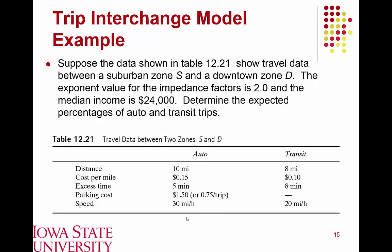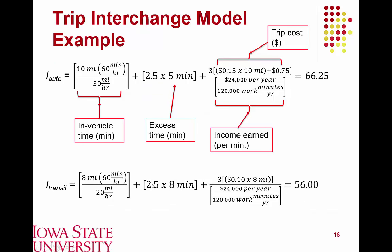We convert all quantities into equivalent minutes. For example, we use the 30 mph travel speed and 10-mile trip distance to estimate total time spent in the automobile, and the 20 mph average speed and 8-mile trip length for transit. Excess time is computed and scaled by 2.5 because travelers are more sensitive to it. Trip cost is scaled by income and converted to equivalent minutes based on median income. The resulting impedance value for auto is 66.25 minutes and for transit is 56 minutes, meaning transit has lower average travel time and is more desirable.